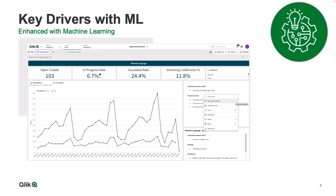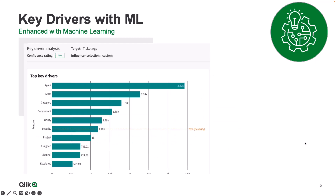Once you have these results, an end user should be able to test and explore by applying user selections and making changes to the original data model, all to support a specific outcome. A common example would be influencing customer churn. First, I need to understand what is influencing customer churn as the target. Then I look into the top influencers — perhaps there's a large list, but I want to focus on the most important ones. With that baseline, I can make modifications within the model to improve that score and ultimately improve customer churn.